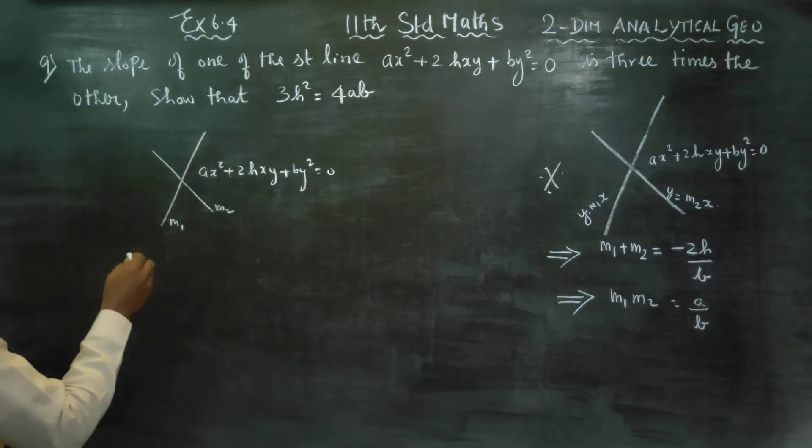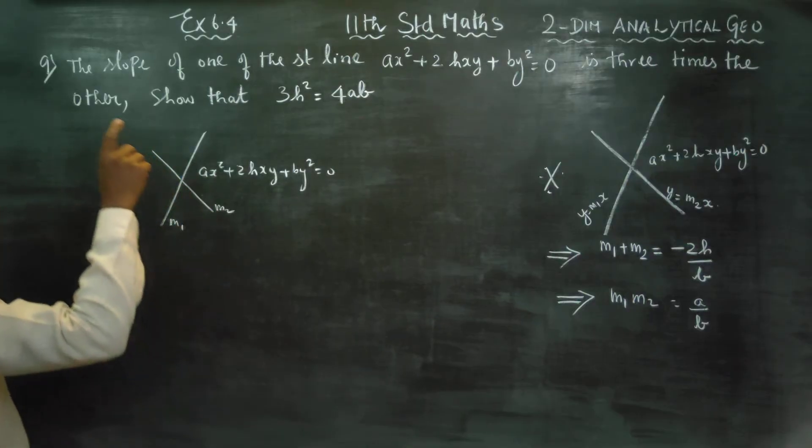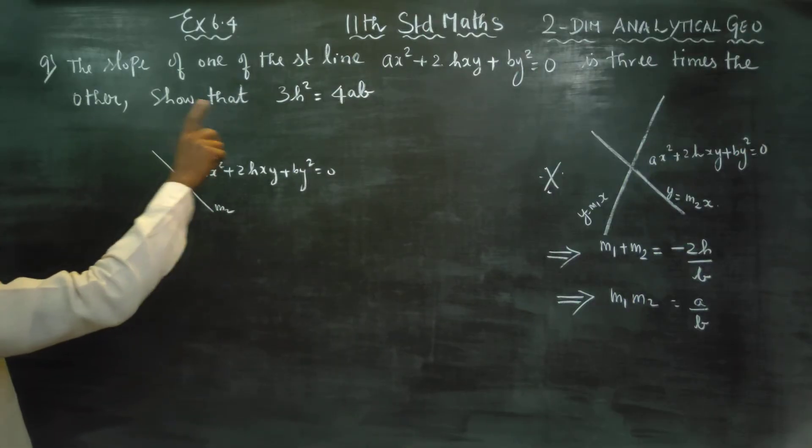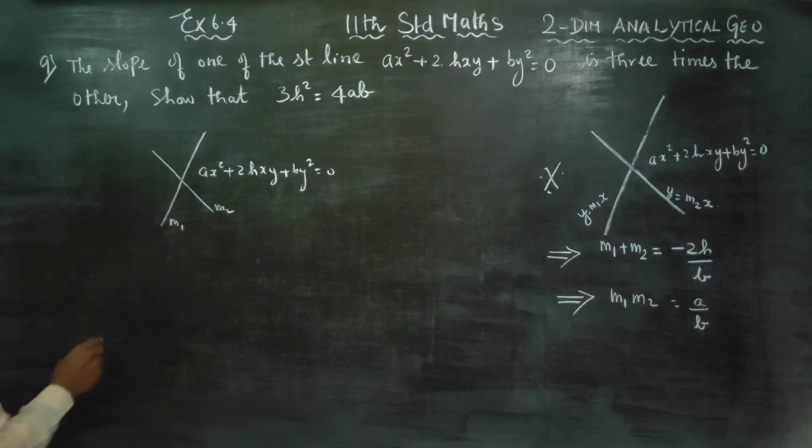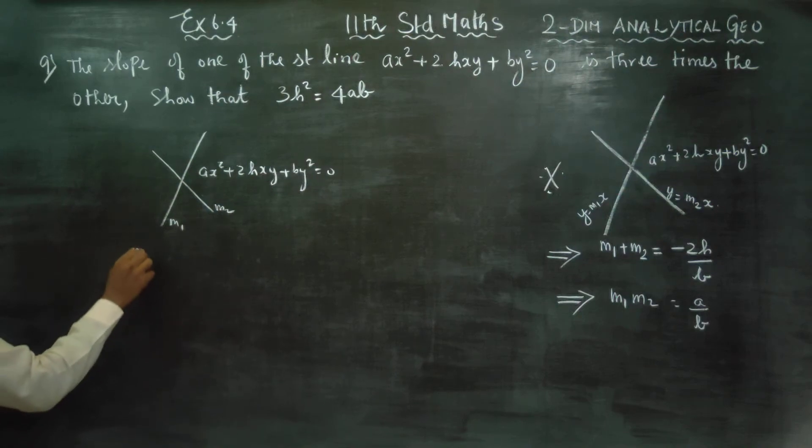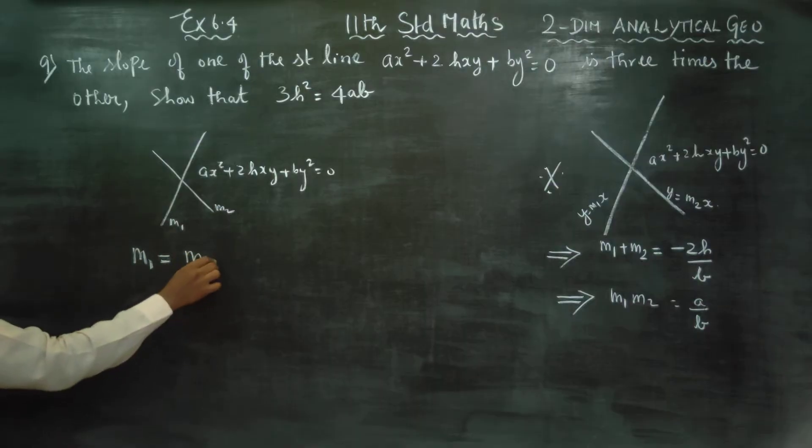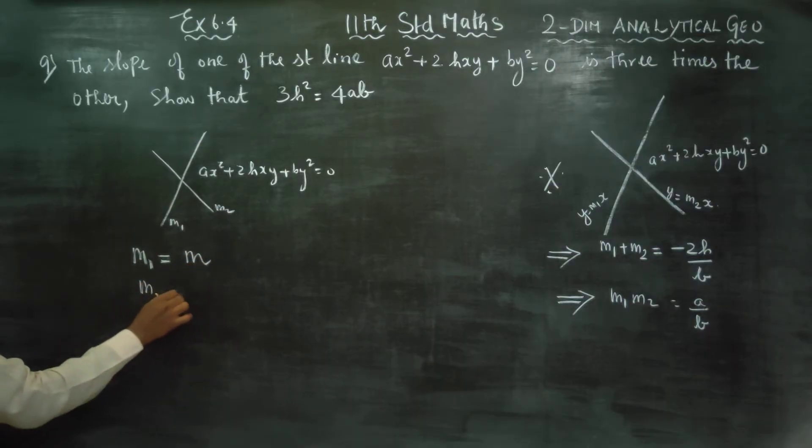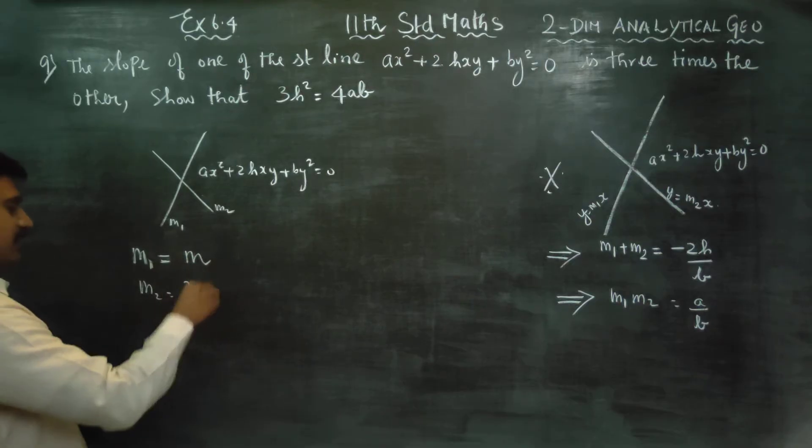First of all, one slope is thrice the other. So, m1 is equal to m, m2 is equal to thrice m. This is the meaning, one slope is thrice the other.